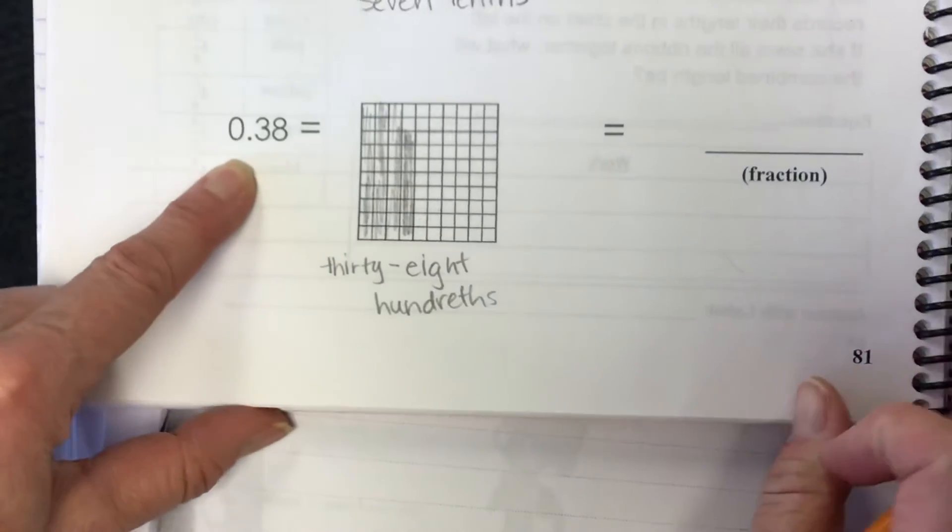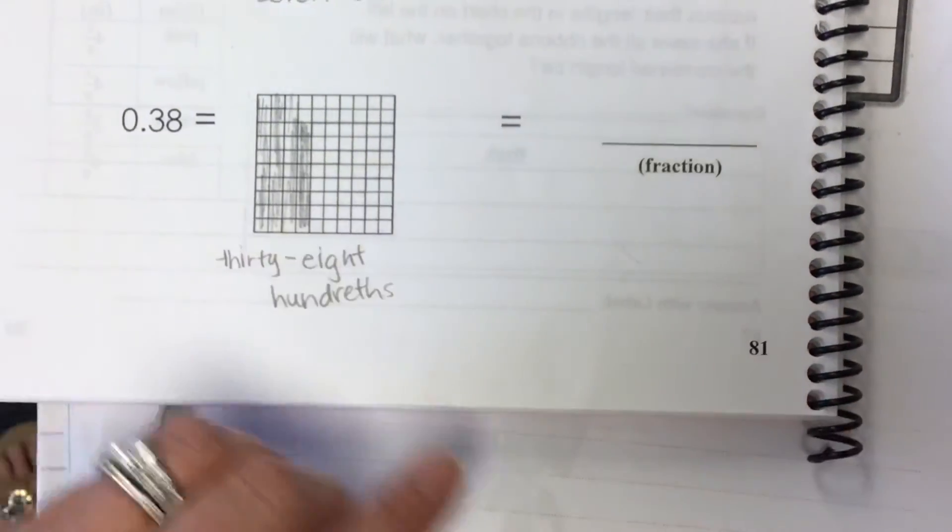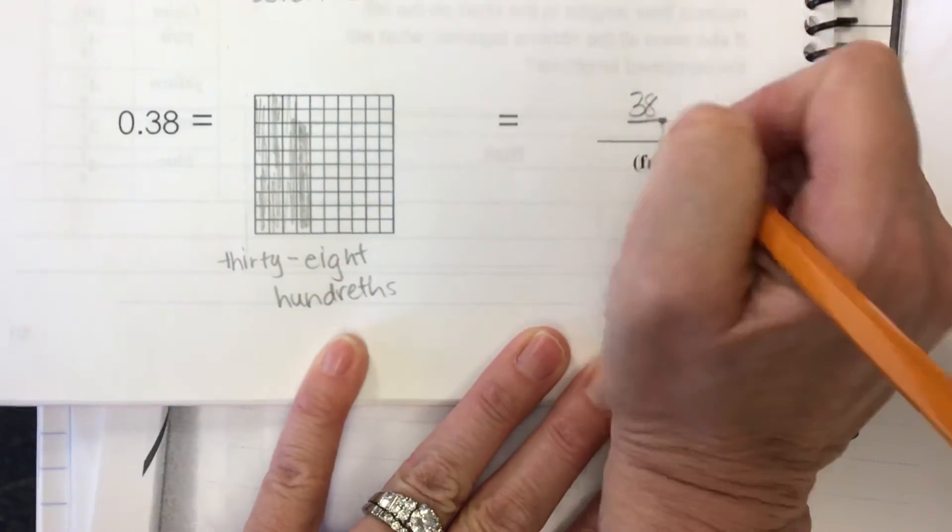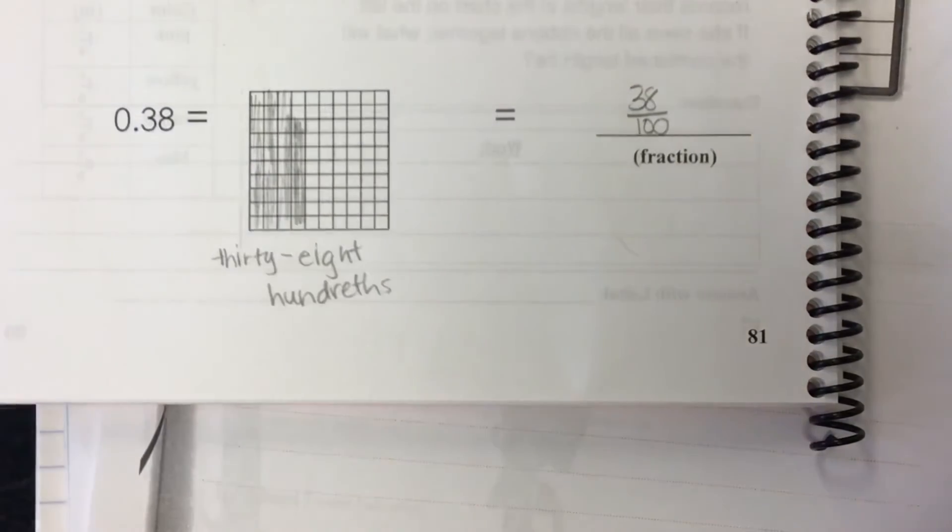How do you write that as a fraction? How do you write thirty-eight hundredths as a fraction? Quentin? 38 over 100. 38 over 100. Yes.